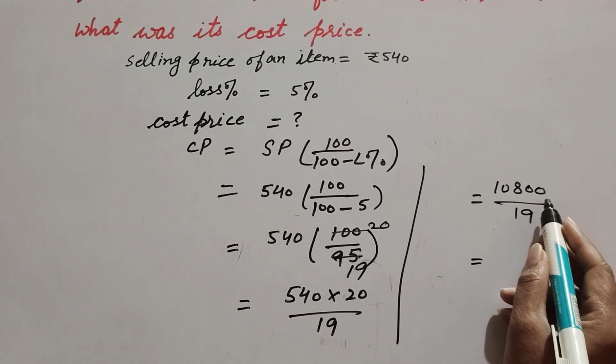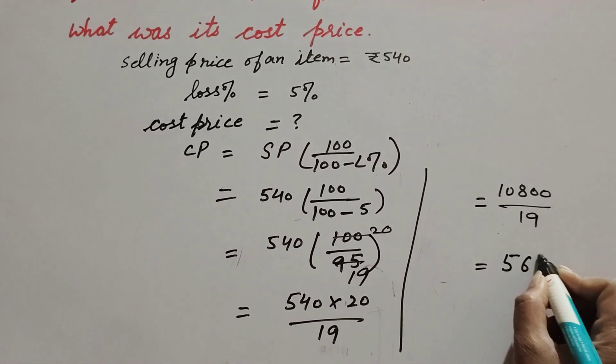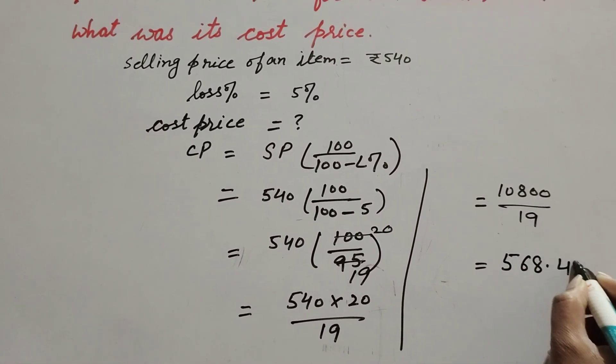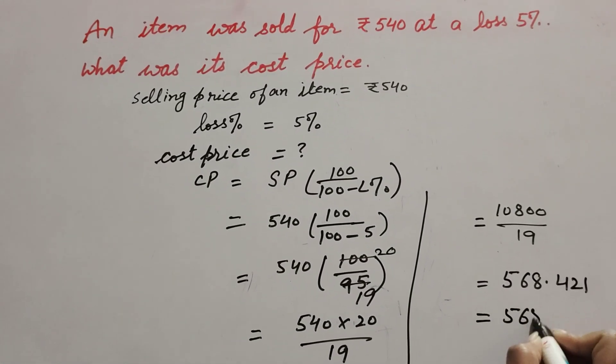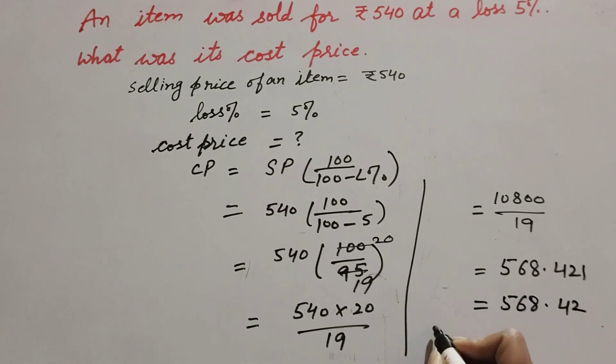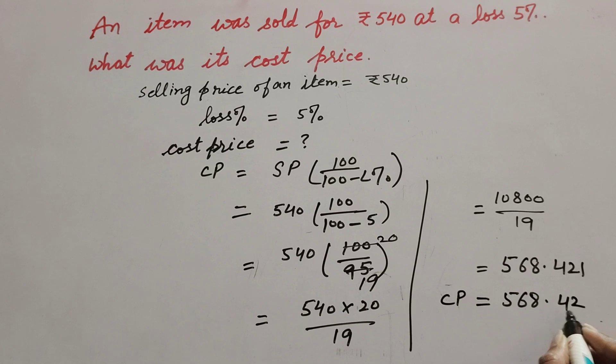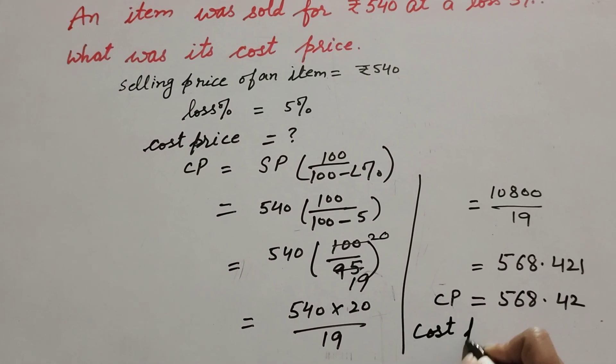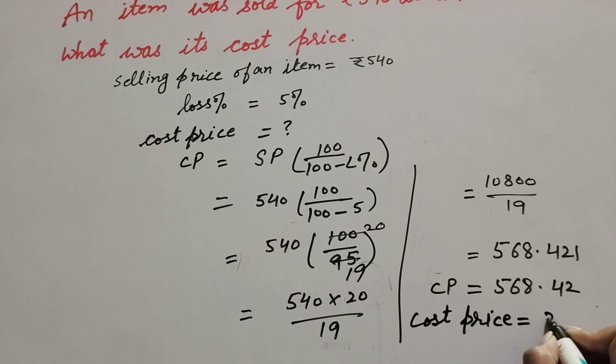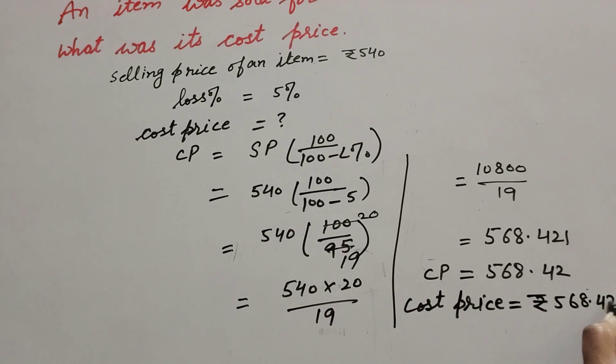10800 divided by 19, we get answer 568.421, it is also equal to 568.42. So cost price is equal to 568.42. Cost price of the article equals rupees 568.42.